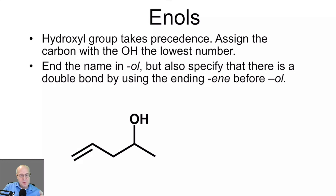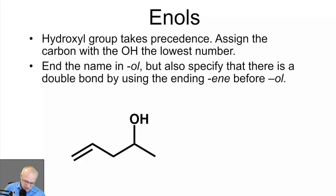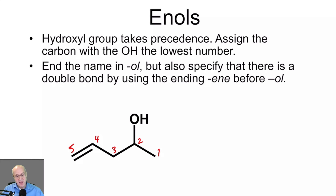Now let's talk about enols — here's another example of priority. Alcohols take priority over alkenes, so this molecule must be named as an alcohol. It also means the carbon bearing the OH must have the lower number, so you start numbering from here: 1, 2, 3, 4, 5. The alkene gets the higher number; the hydroxyl gets the lower one because the OH takes priority.